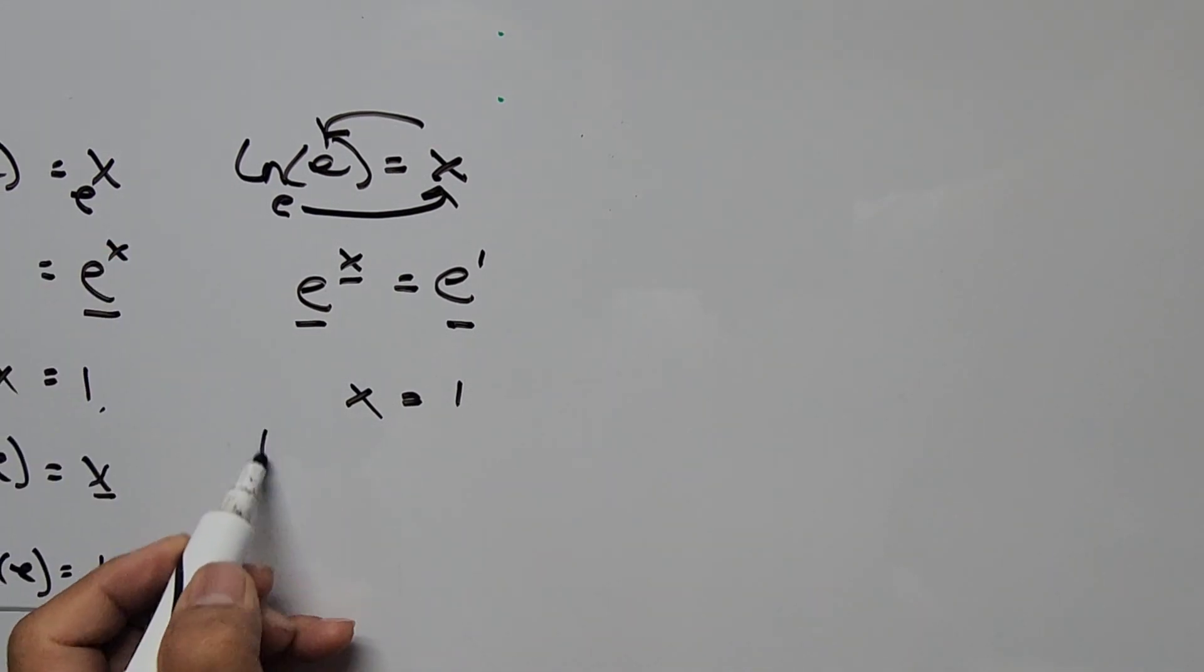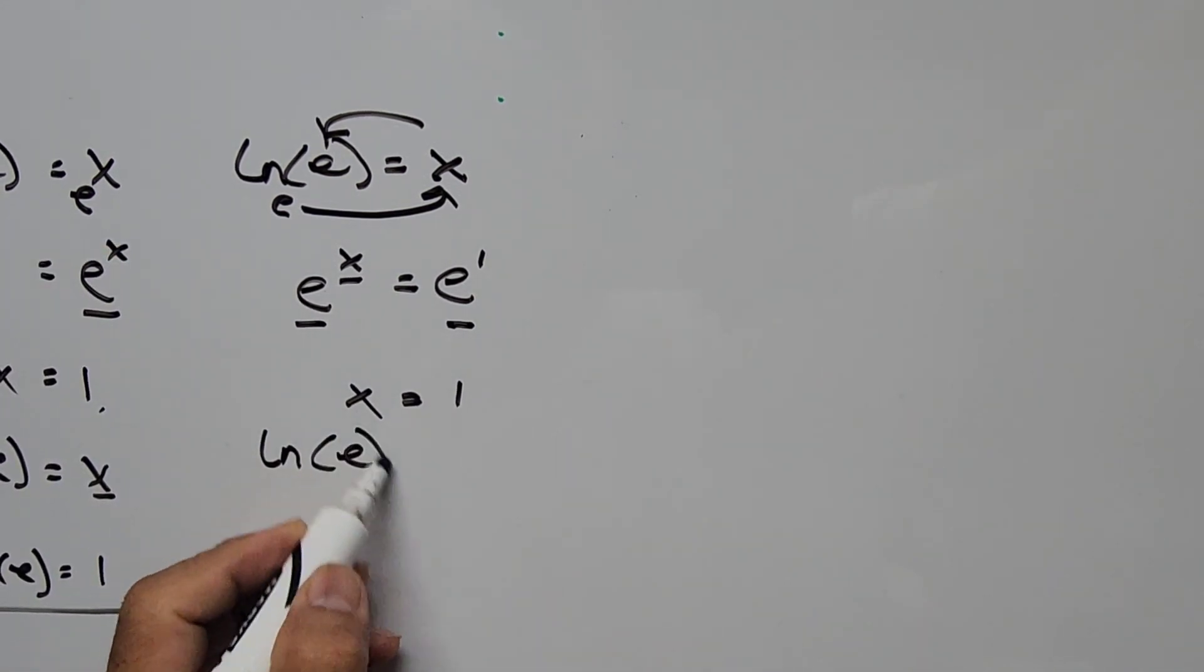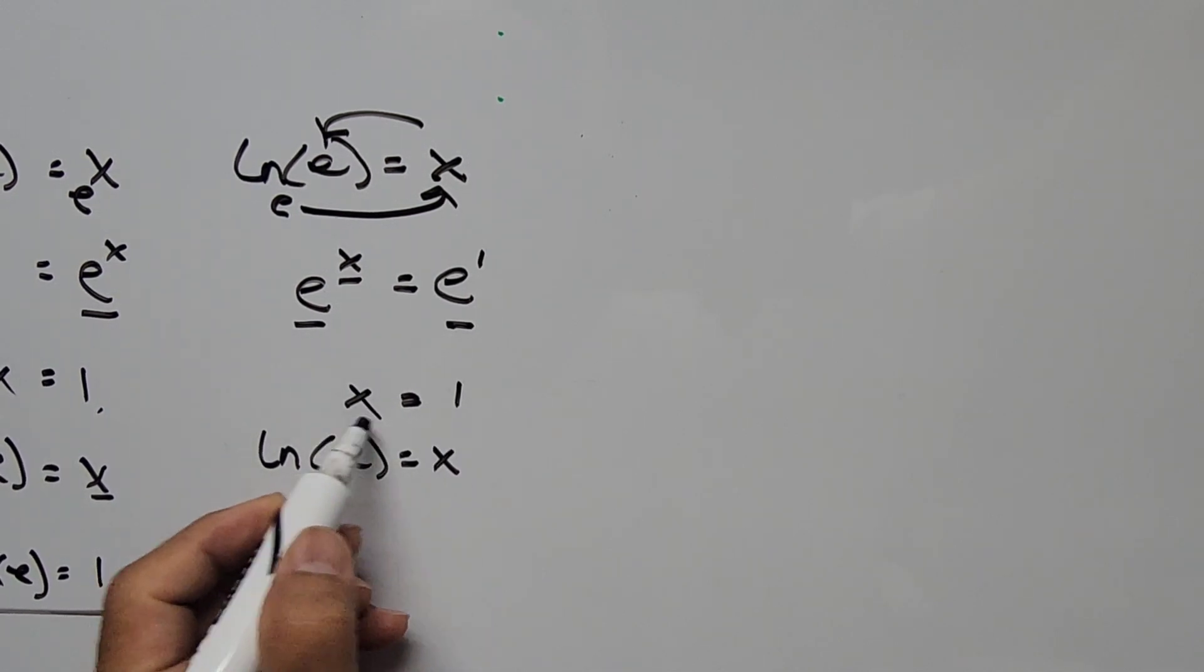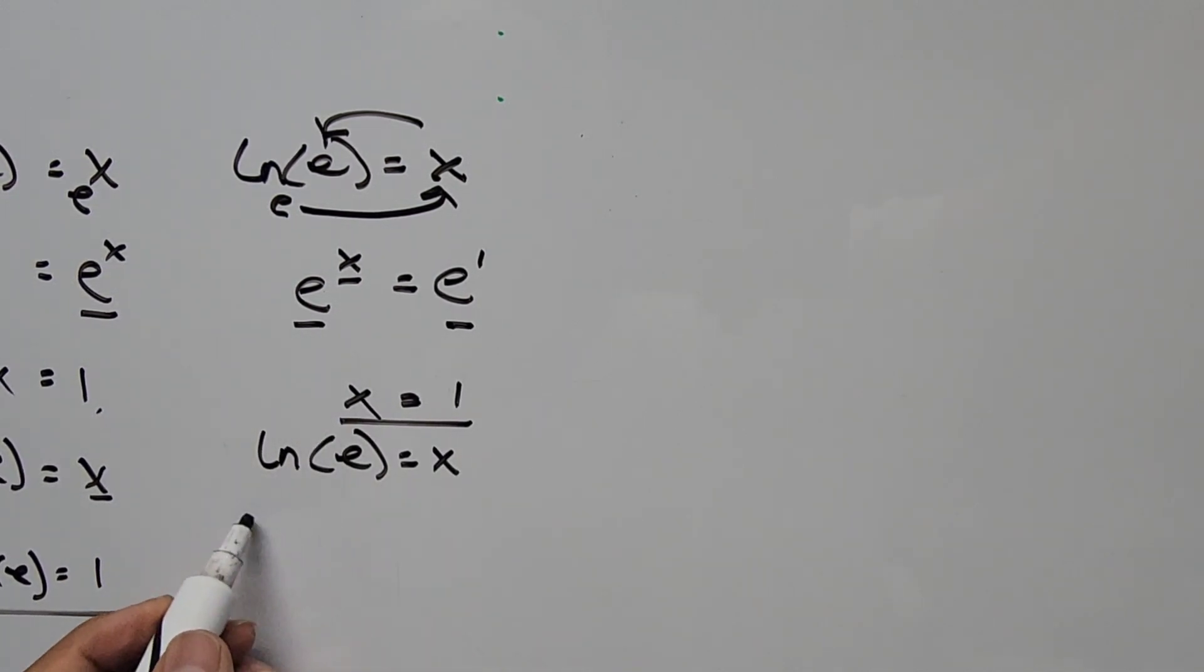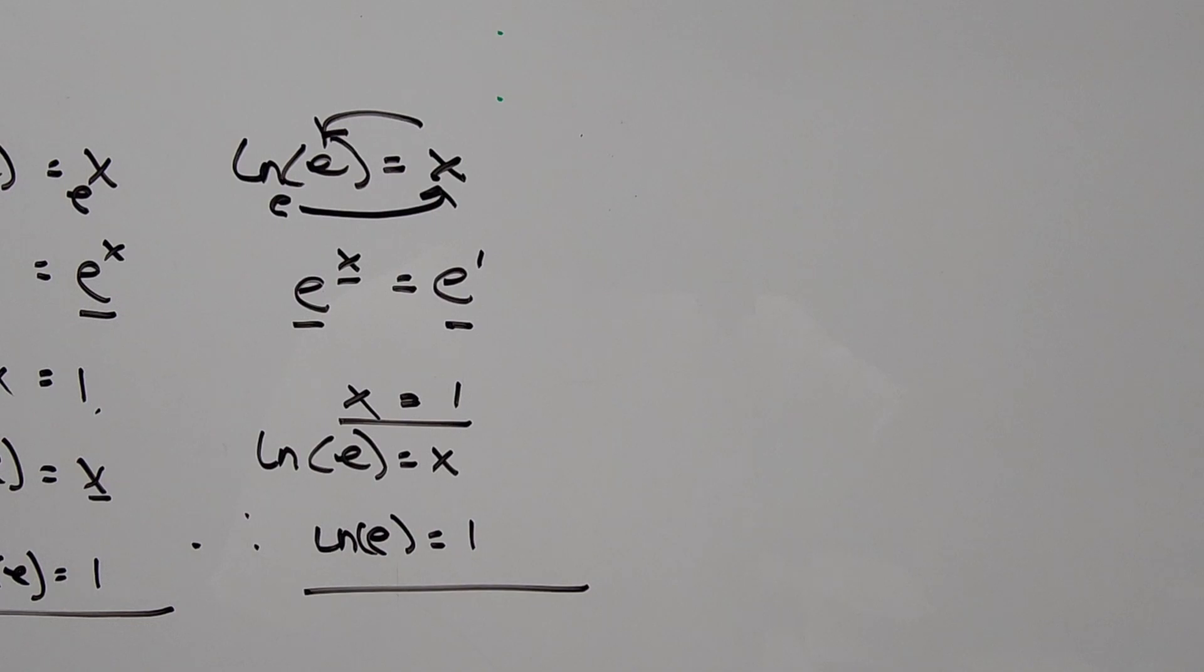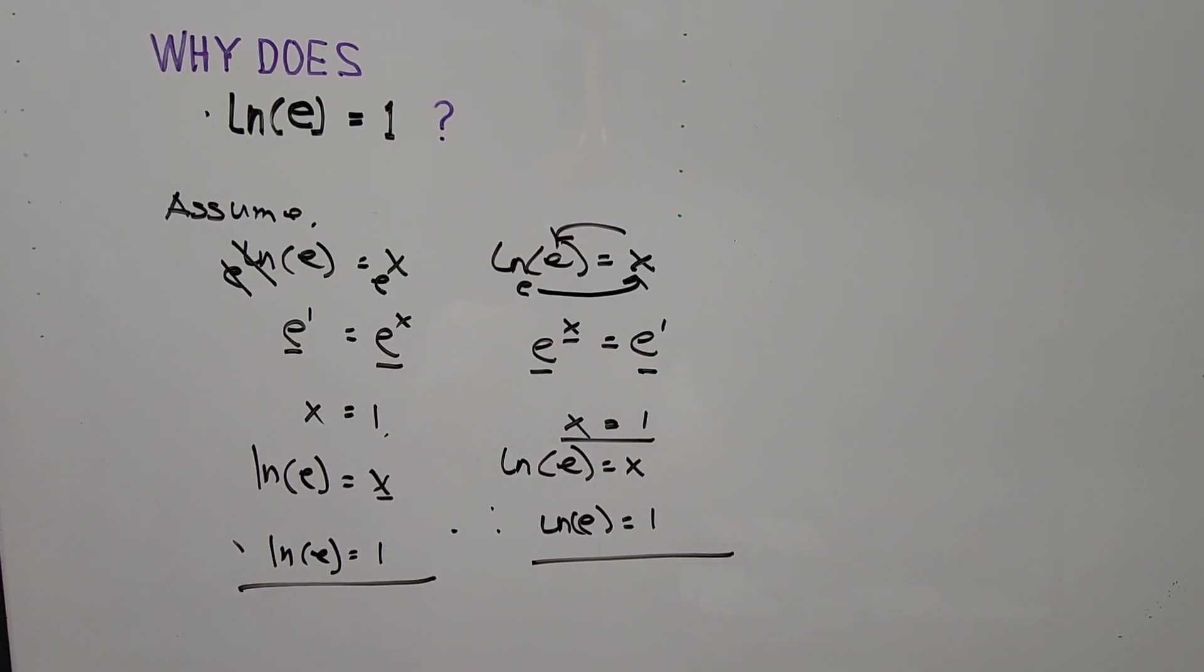And once again, we have that equation from here: natural logarithm of e equals x. And we have the value of x as 1, so therefore ln(e) is equal to 1. And so that's the proof.